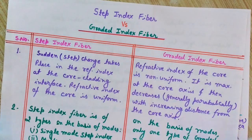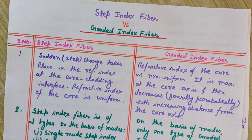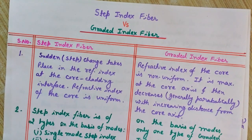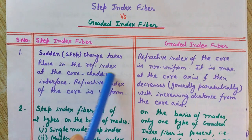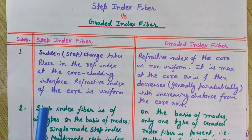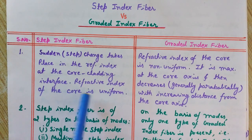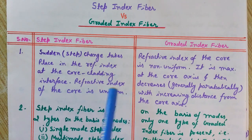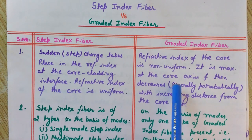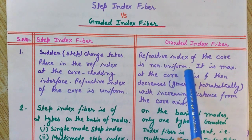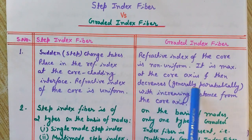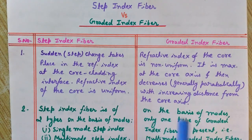Now let's compare the two types. In step index fiber, a sudden or step change takes place in the refractive index at the core-cladding interface. The refractive index of the core is uniform — it does not change within the core. This is not the case with graded index fiber, where the refractive index of the core is non-uniform: it is maximum at the core axis and decreases generally parabolically with increasing distance from the core axis.